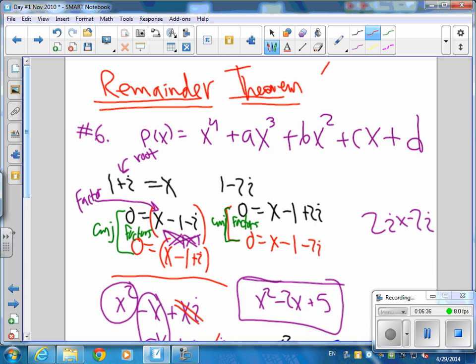Remainder theorem, you're just going to put a number in. Let's say you're looking at a root of x minus 1. So that's the factor. What's the root? 1, right? So if I put in a 1 into this equation, I could get an answer. If I put in a 2, I can get a remainder answer.